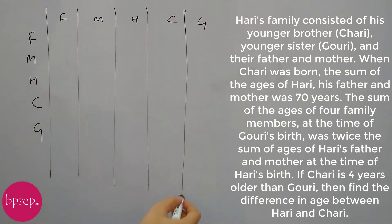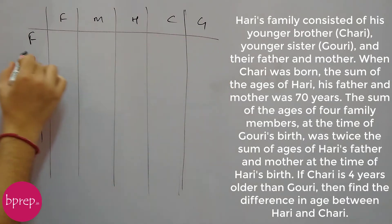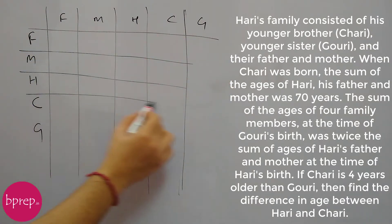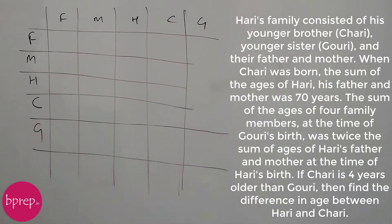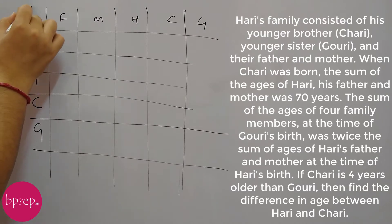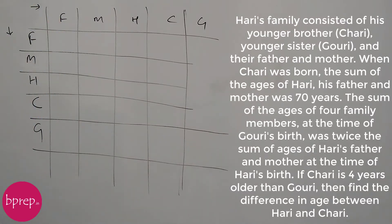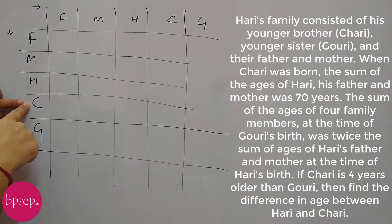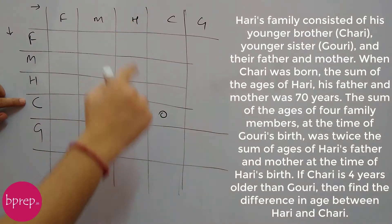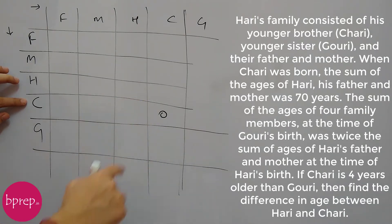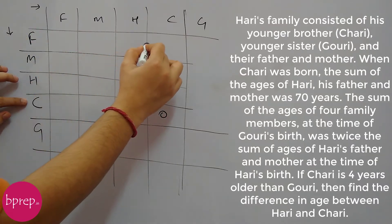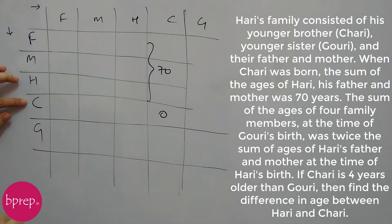It takes a few extra seconds but it will help you get the concept without any error. So when Chari was born — at the time of Chari's birth — Chari's age is 0, and the sum of father's, mother's and Hari's ages is 70. The sum of ages of four family members at the time of Gauri's birth is also given.